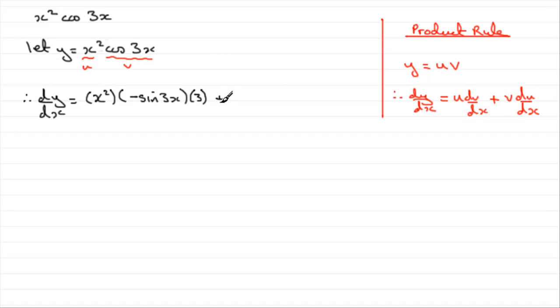Then we have plus. Now we've got to do v du dx. So we take the other function of x, cos 3x, put that in brackets, and multiply it by the differential of x squared, which is 2x.